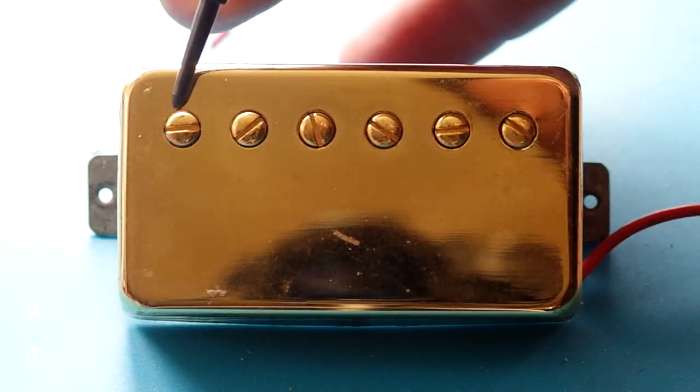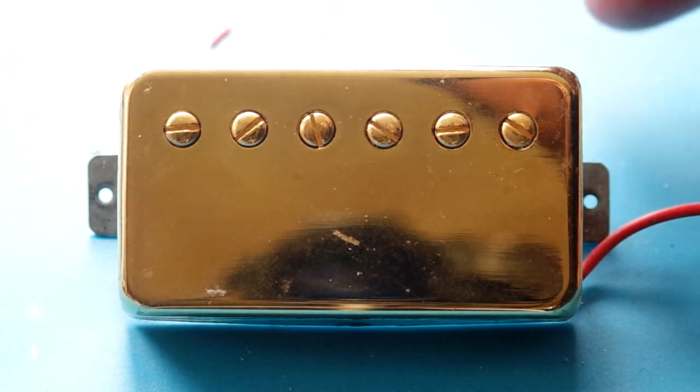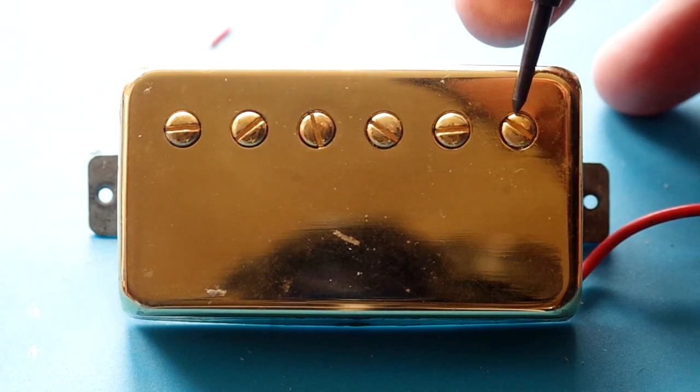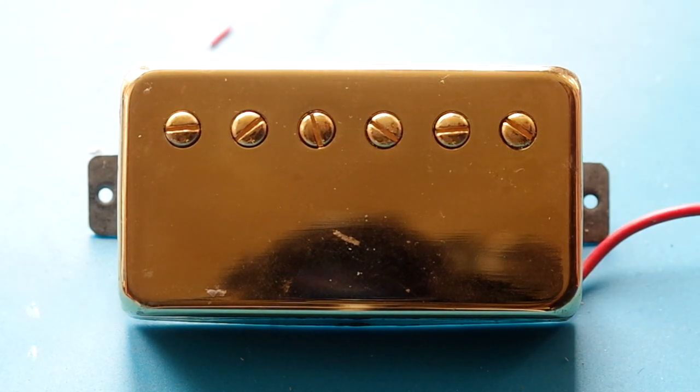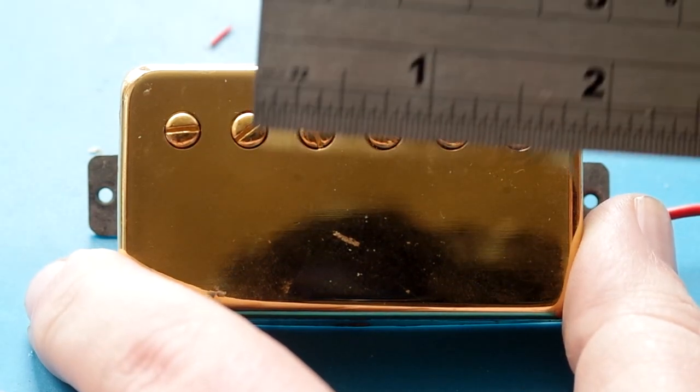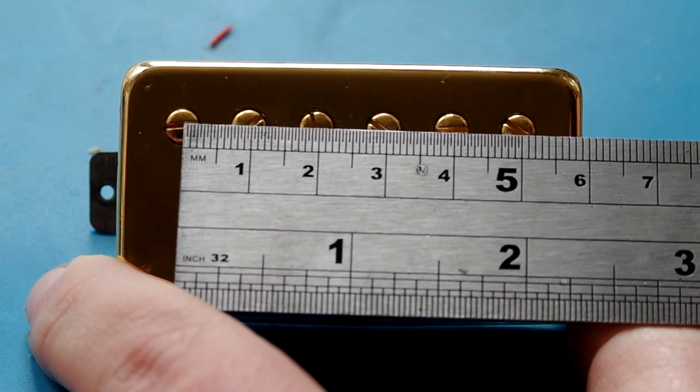Now the first step is ordering your new cover and checking that it fits. We're going to measure from the middle of the outer pole piece to the middle of the other outer pole piece. So from the high E to the low E, from the middle of the pole piece to the middle of the pole piece.